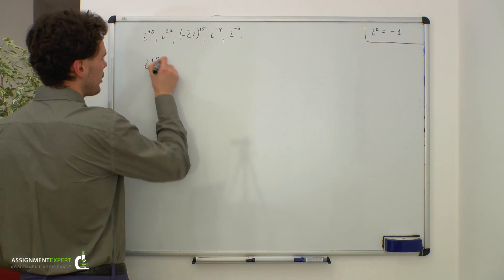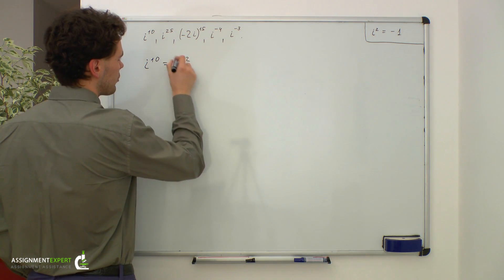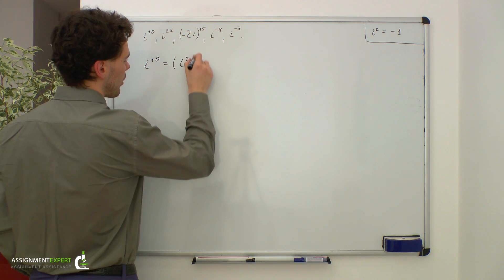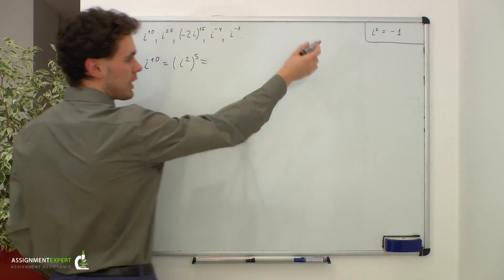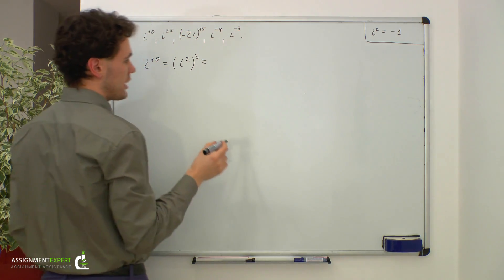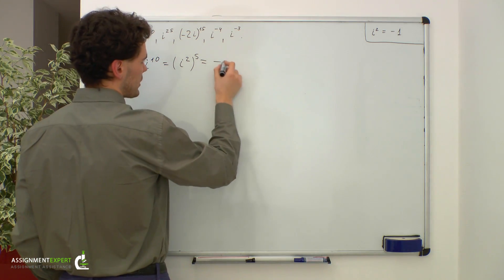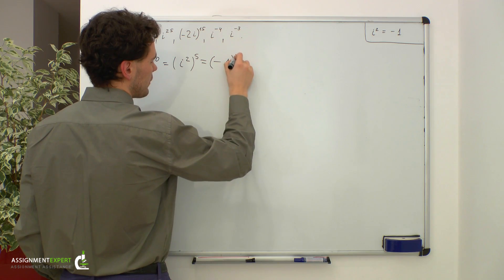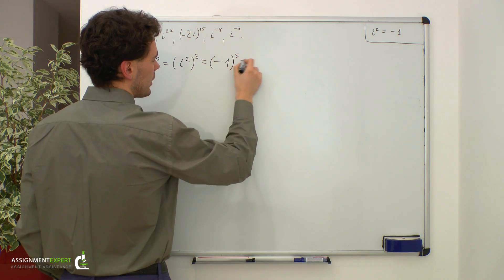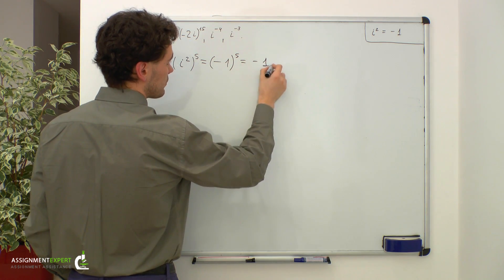i raised to the 10th power is equal to i squared raised to the 5th power. We know that i squared is equal to negative 1, so this expression gives us negative 1 raised to the 5th power. And this is equal to negative 1.